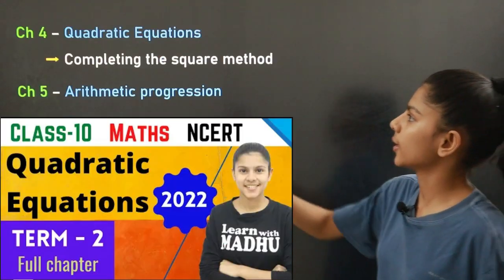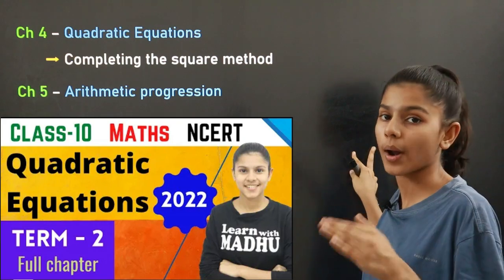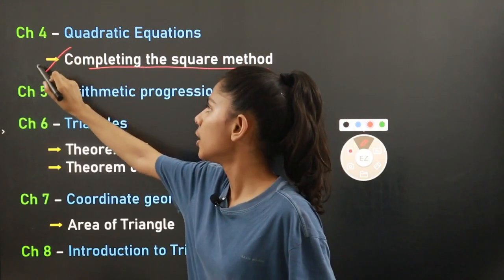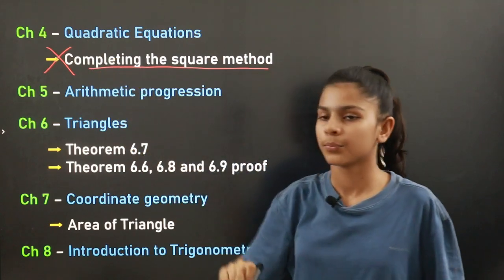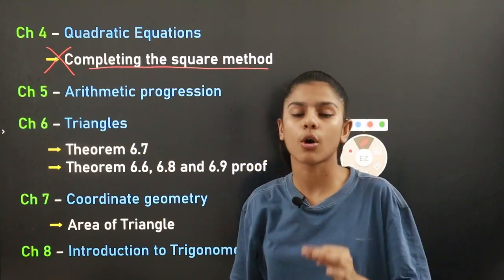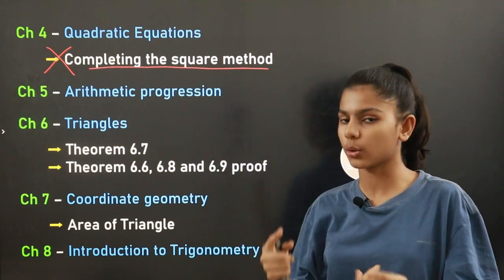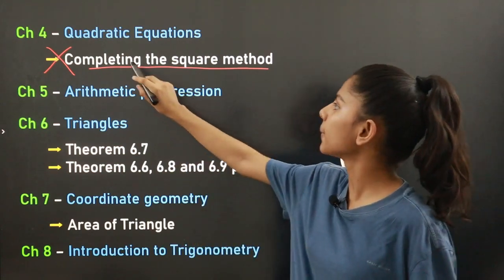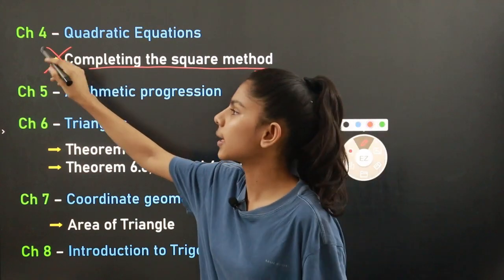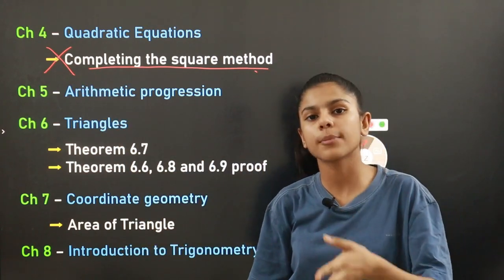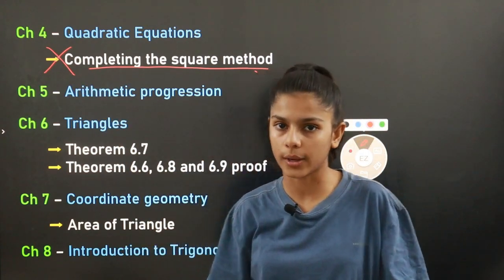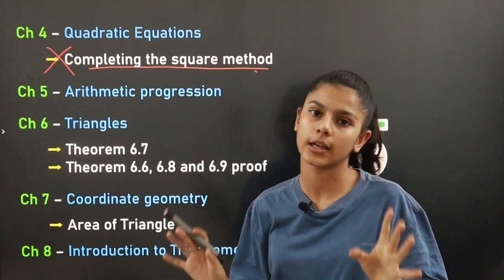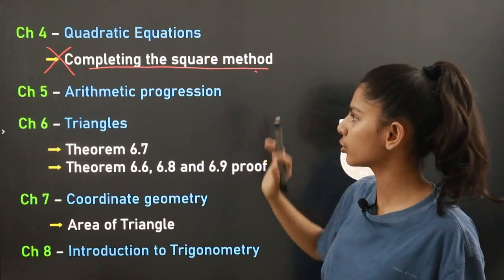Chapter number four is Quadratic Equations. The completing the square method has been reduced. There are three methods to solve quadratic equations: factorization, the quadratic formula, and completing the square method. The completing the square method has been removed, so you will solve quadratic equations using factorization or the quadratic formula.